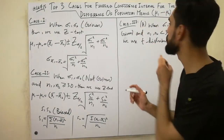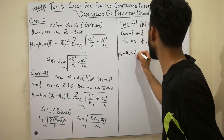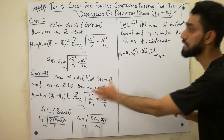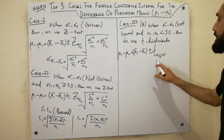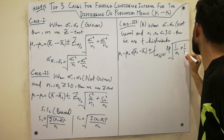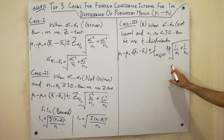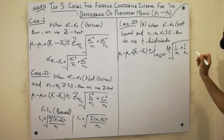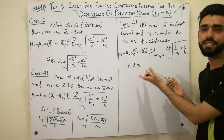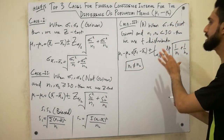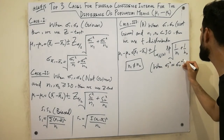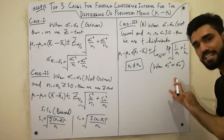For Part A of Case 3, the formula is: μ1 minus μ2 equals X1-bar minus X2-bar plus or minus T-alpha/2(V) times Sp times the square root of 1/n1 plus 1/n2. Note that instead of Z-alpha/2, we use T-alpha/2. Also, n1 does not have to equal n2 — for example, n1 could be 5 and n2 could be 12. This Part A formula is used when σ1² equals σ2² — that is, when the first variance equals the second variance.